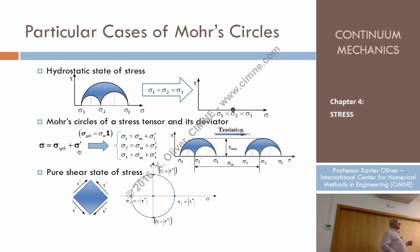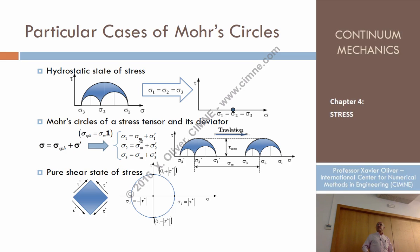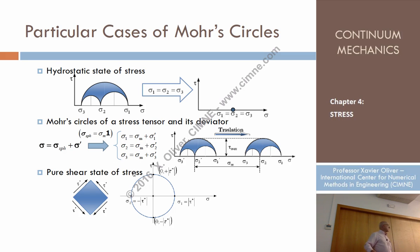What about the principal stresses? If sigma is diagonalized, then sigma_1 equals the component from the spherical part, which is the mean stress sigma_m, plus sigma_prime_1. Similarly, sigma_2 = sigma_m + sigma_prime_2, and sigma_3 = sigma_m + sigma_prime_3. So the deviatoric principal stresses are simply the original principal stresses minus the mean stress, where sigma_m is the mean value of sigma_1 plus sigma_2 plus sigma_3.